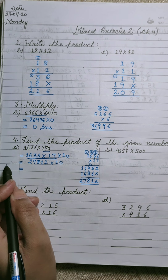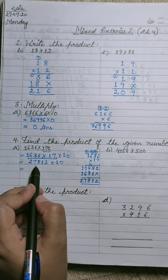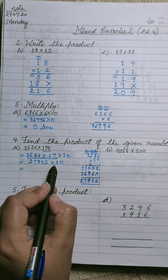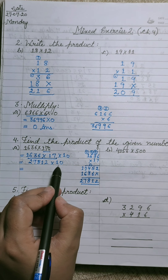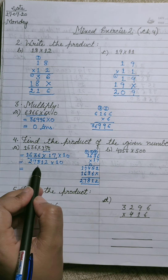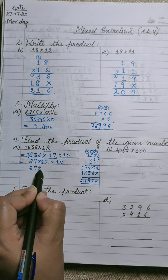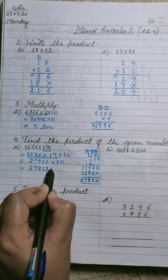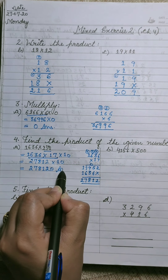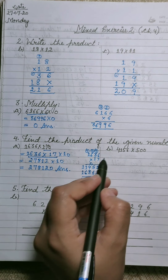The rule is: to multiply the given number by 10, if there is only one zero, attach a single zero at the right side of the number. Whatever number of zeros you have, attach that many zeros to the right side. Since there is one zero here, attach a single zero to the right of the answer. Part A is complete. Now move to part B.